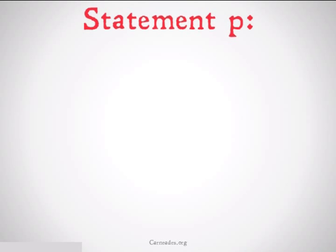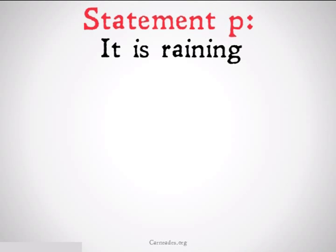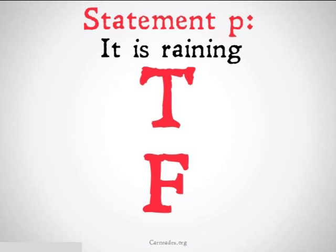A truth table is where you take a statement — some statement P — and list all the possible outcomes that could happen with P. With a single statement, it's either true or false.